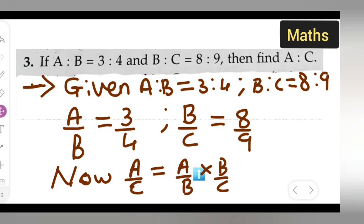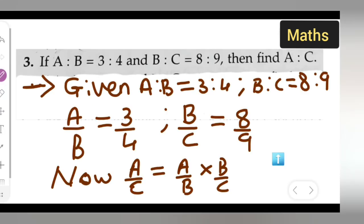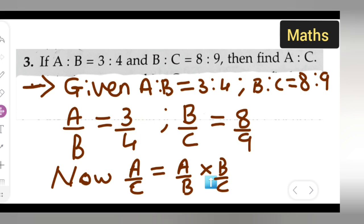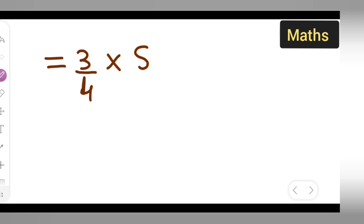So now what we need to do is write down the value of A upon B, which is 3 upon 4. Next, we need to put the multiply sign over here.